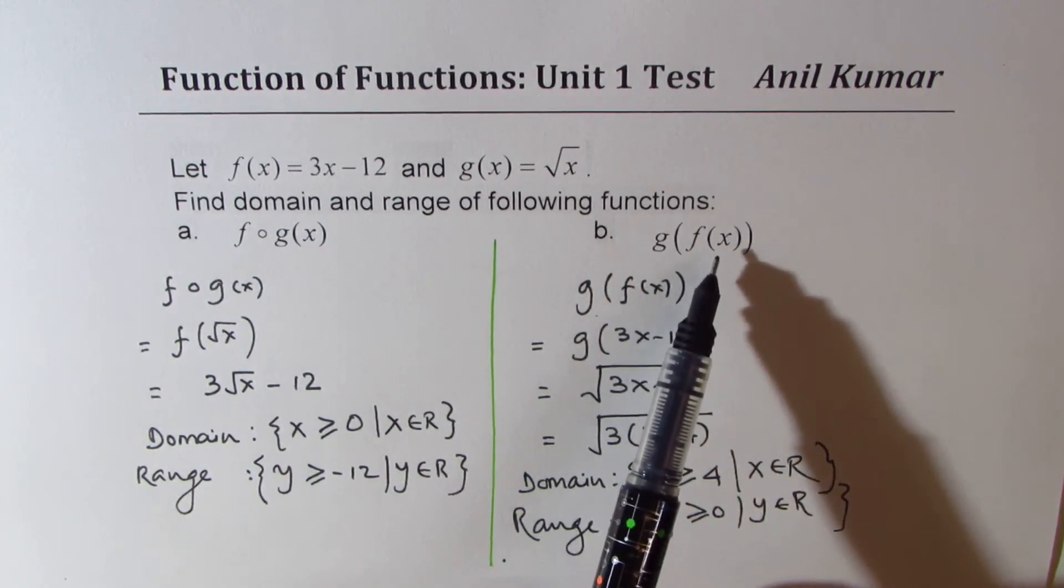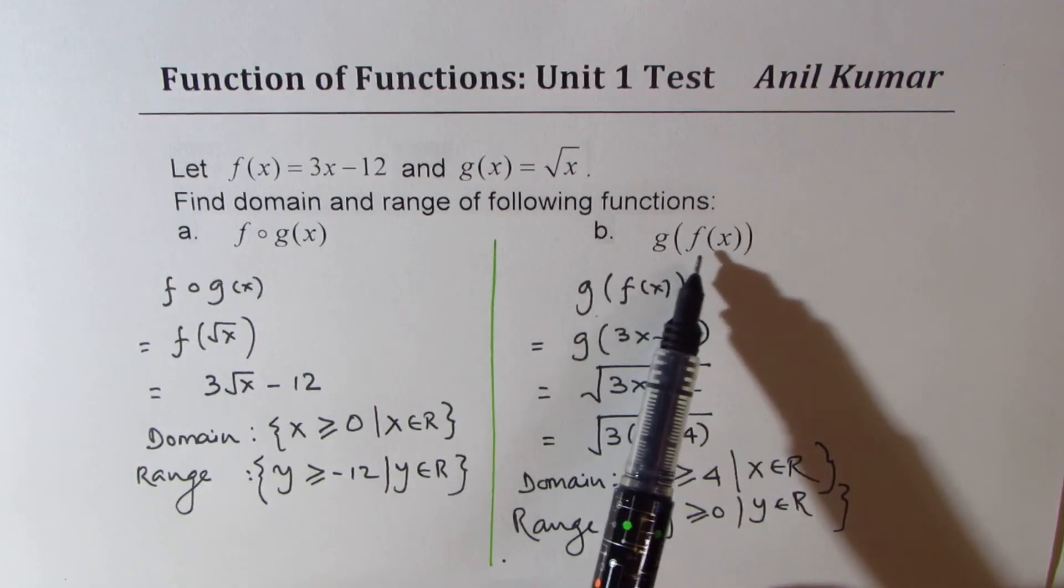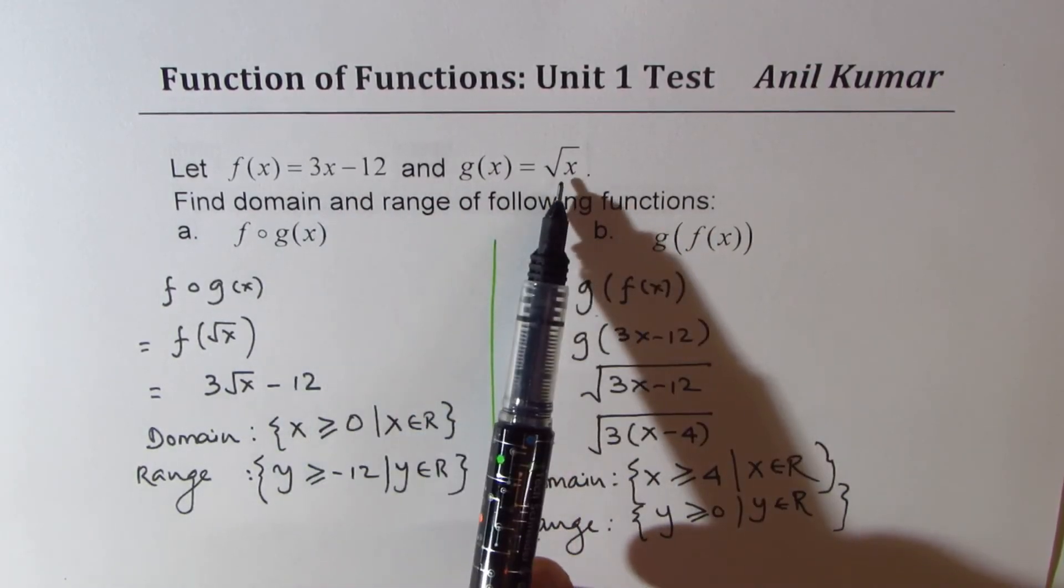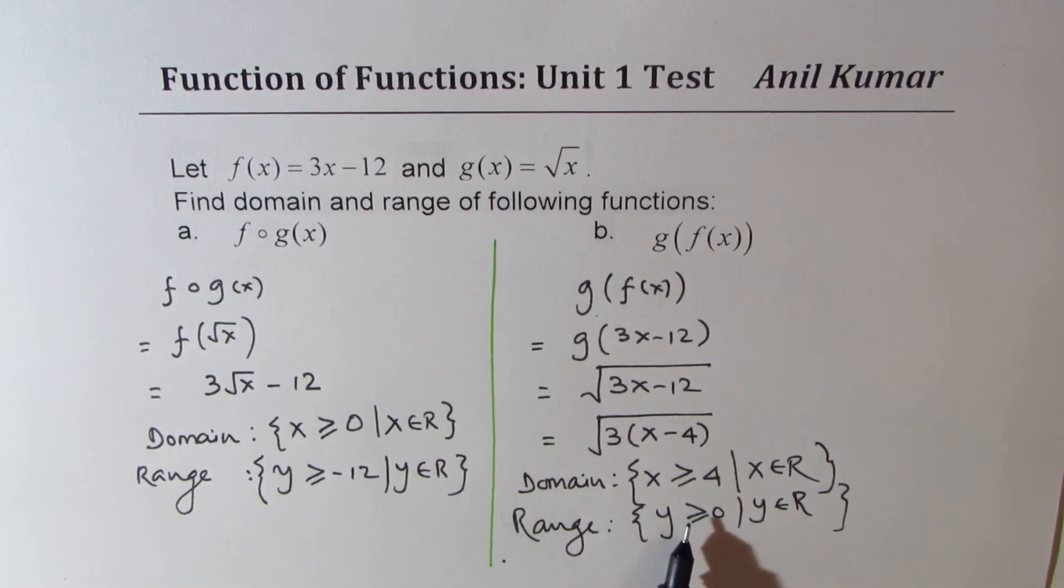So we are looking into range of f of x, which should be positive. Do you see that? So that gives you x greater than or equal to 4, right? So in this case, we are looking for the range 3x minus 12 to be greater than or equal to 0.